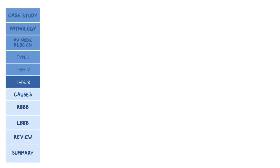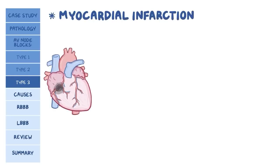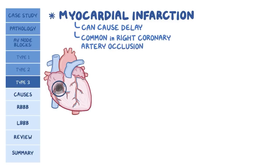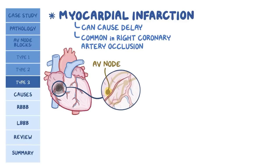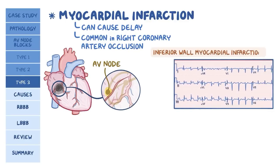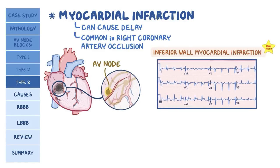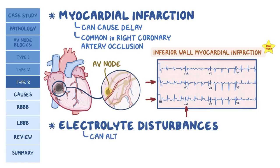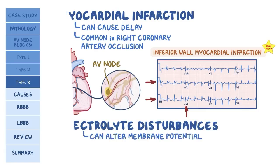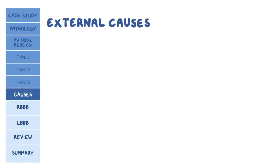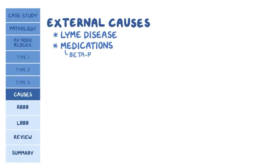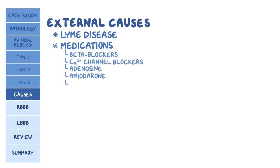A lot of things can cause the three types of AV block. A myocardial infarction may involve the conduction pathway, causing a delay in electrical conduction. This is especially common in right coronary artery occlusion because it gives off a small branch that supplies the AV node. On the exam, a clue towards right coronary artery occlusion would be a case of inferior wall myocardial infarction, indicated by elevation of the ST segments in leads 2, 3, and AVF. Electrolyte disturbances like hyperkalemia can also alter the membrane potential. External causes include Lyme disease and medications such as beta blockers, calcium channel blockers, adenosine, amiodarone, and digoxin.